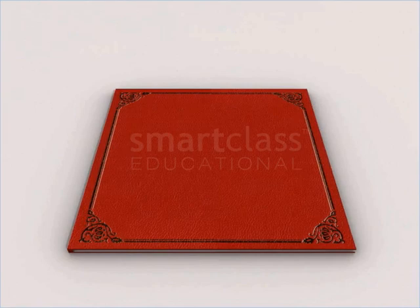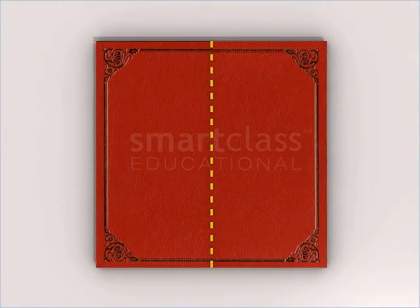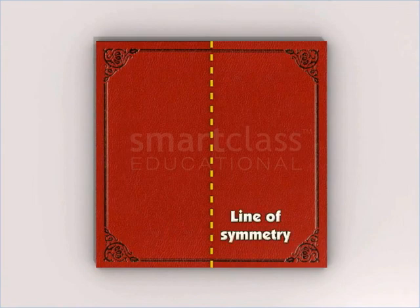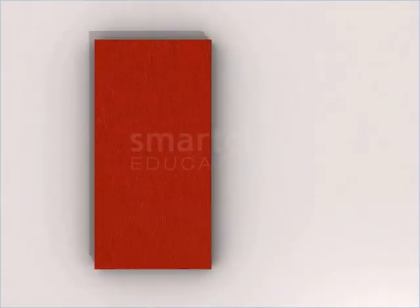Observe what happens to this book. The dotted line is called a line of symmetry. A line of symmetry is a line that can divide a figure, such as this book, into two equal halves.